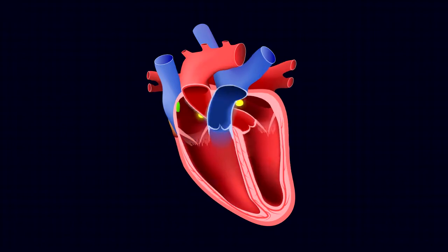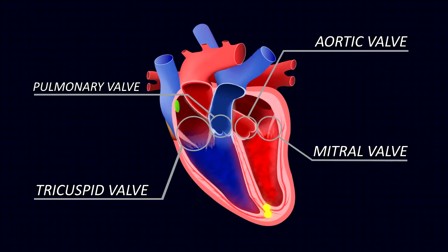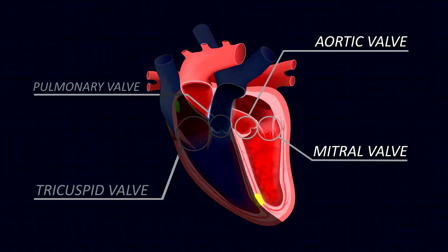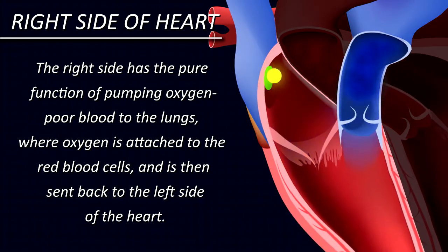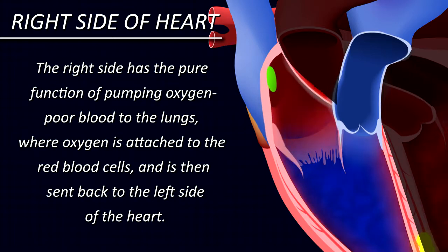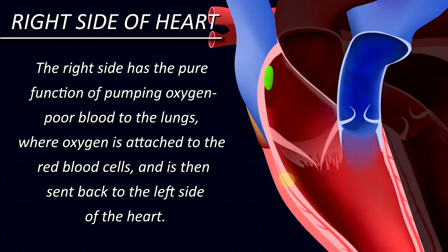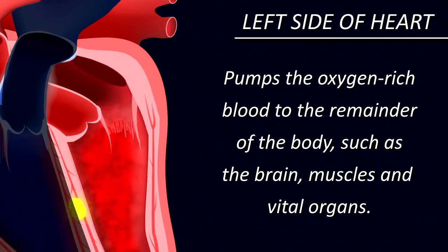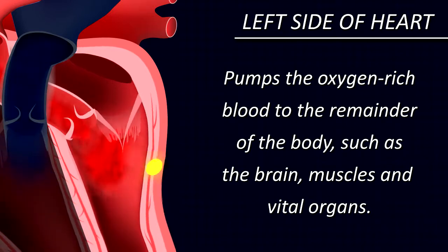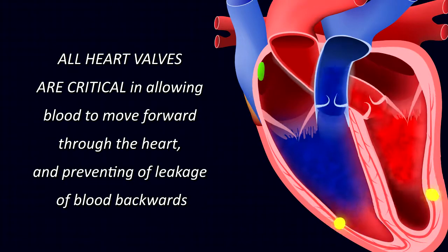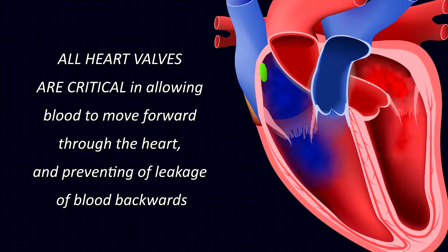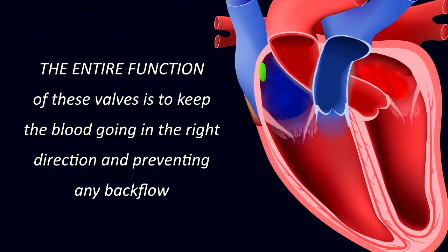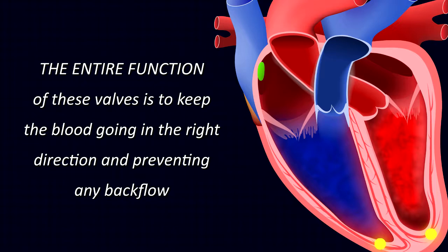As a brief and general review, there are a total of four heart valves in the hearts of all mammals — two right-sided and two left-sided. The right side of the heart pumps oxygen-poor blood to the lungs, where oxygen is attached to the red blood cells and sent back to the left side, which pumps oxygen-rich blood to the remainder of the body, such as the brain, muscles, and vital organs. All heart valves are critical in allowing blood to move forward through the heart and preventing backflow.